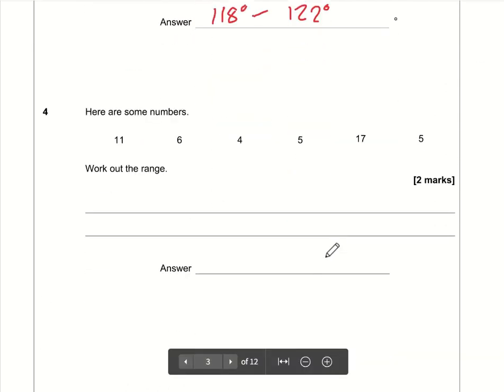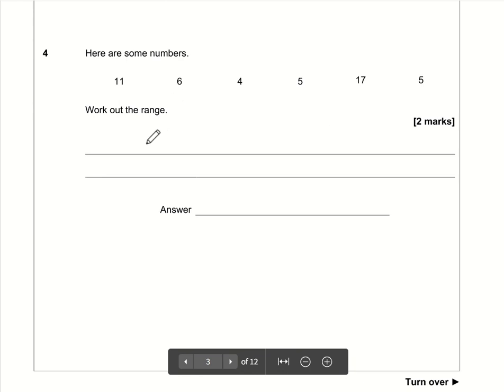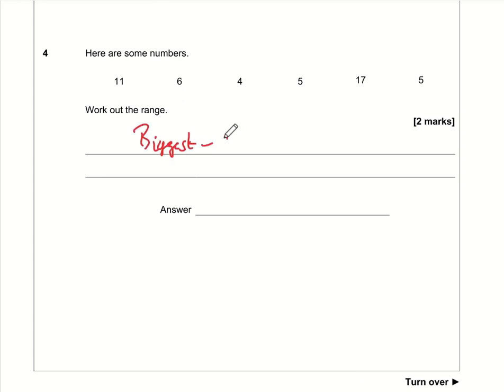Question 4: We're working out the range. Remember, the range is the biggest minus the smallest. The biggest is 17, the smallest is 4, so 17 minus 4 equals 13.